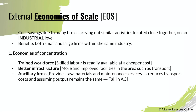External economies of scale are cost savings at an industry level — all companies in an industry working together to reduce overall costs, including both small and large firms. Economies of concentration refers to when companies are grouped together, such as in Silicon Valley, where there are higher levels of skilled labor, a trained workforce, better infrastructure, and ancillary firms. For example, shared transport between firms reduces costs and better workforce collaboration leads to improved industry-wide decisions.